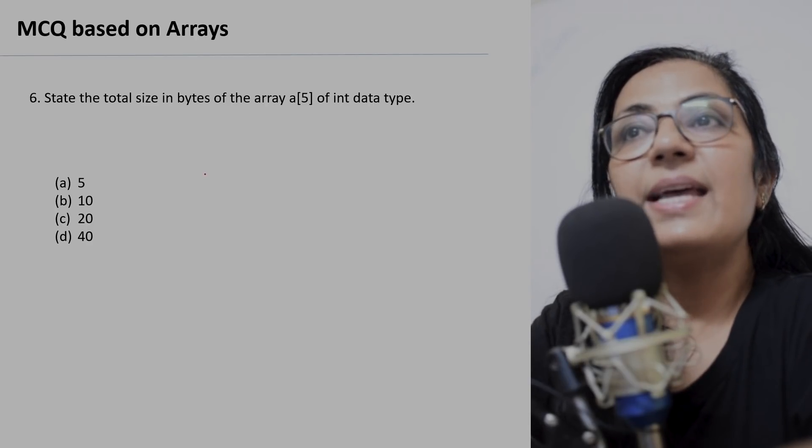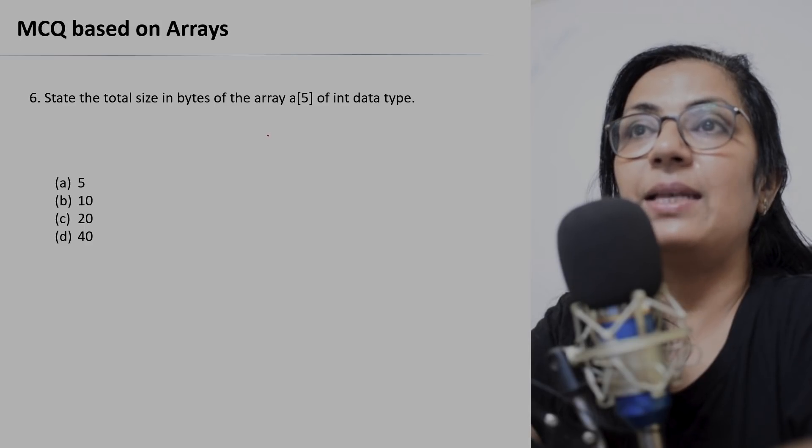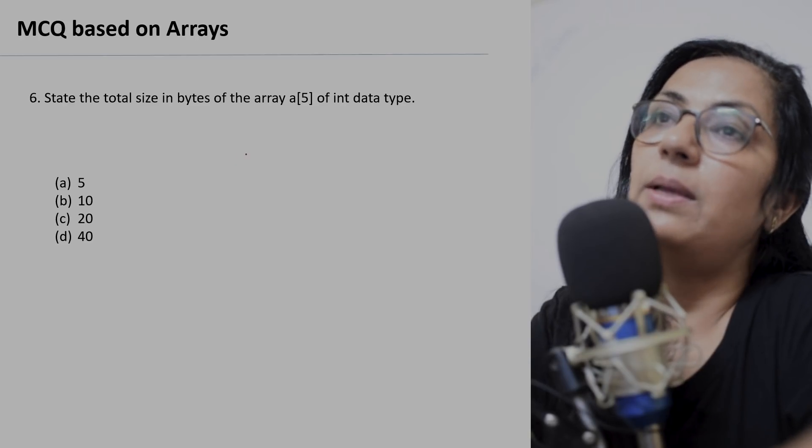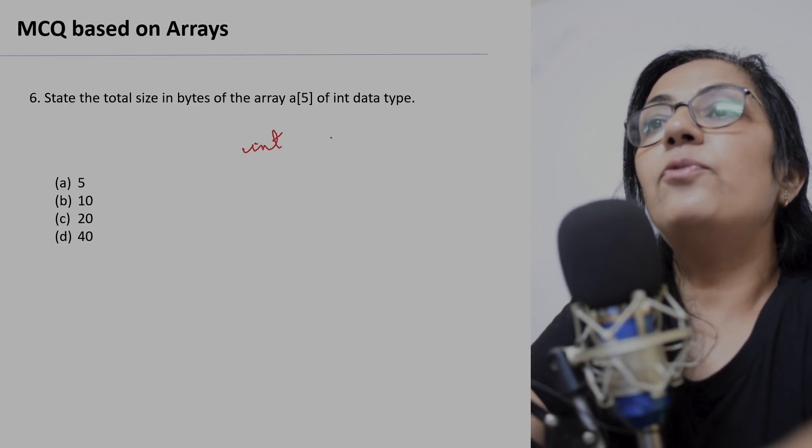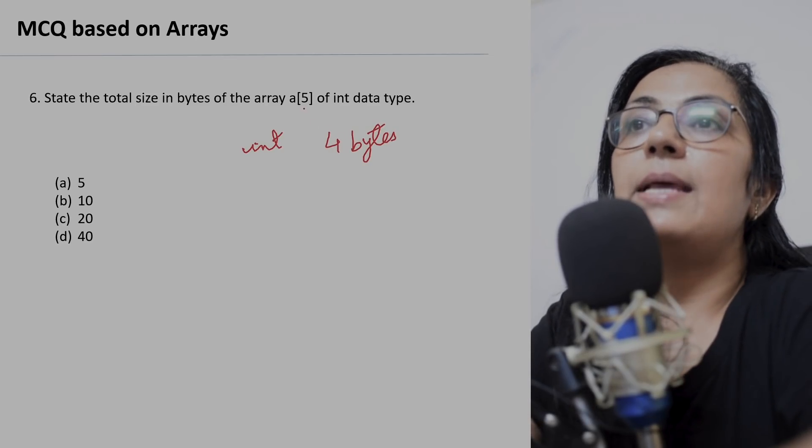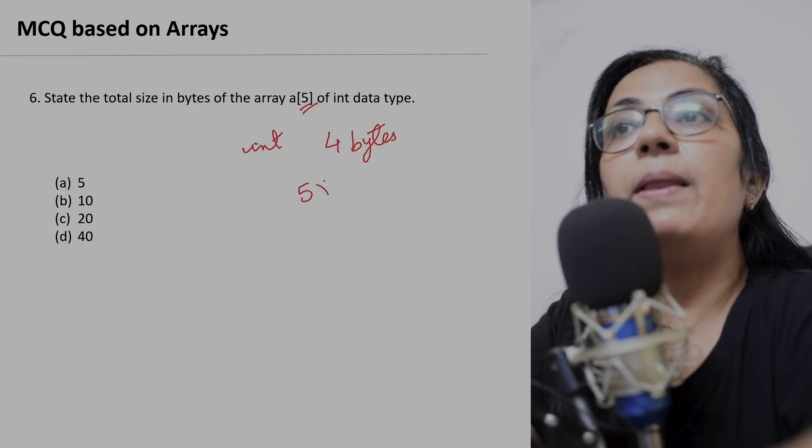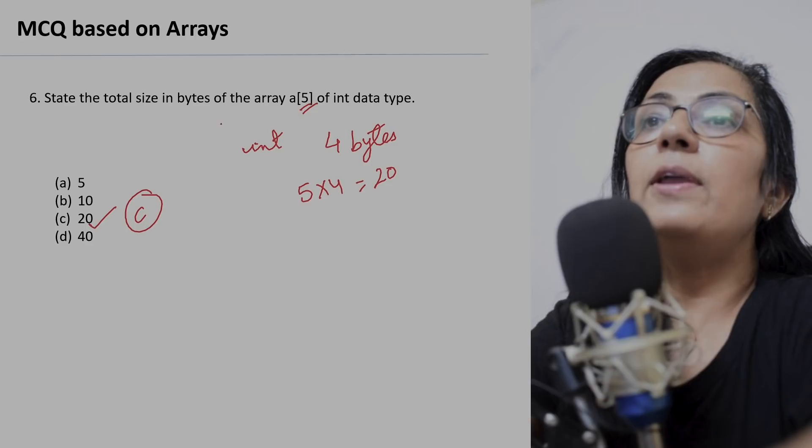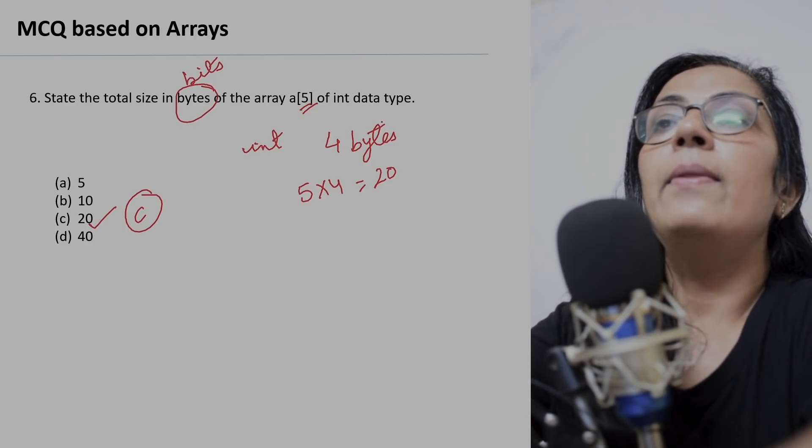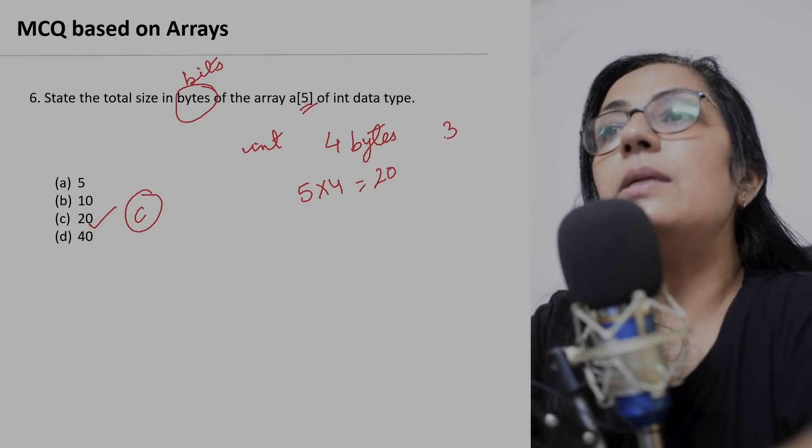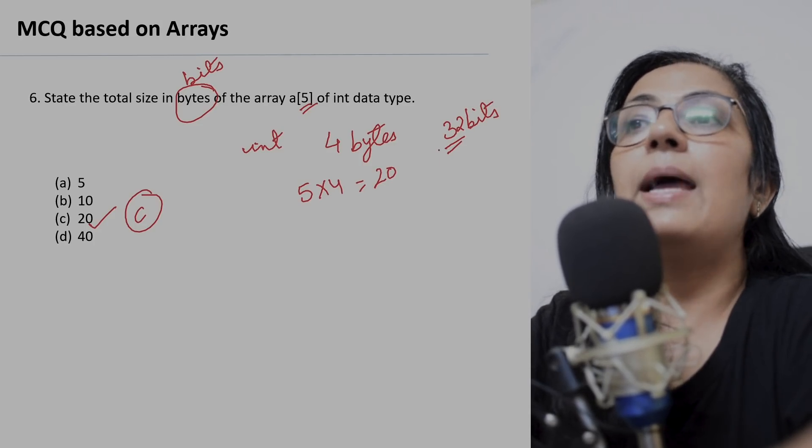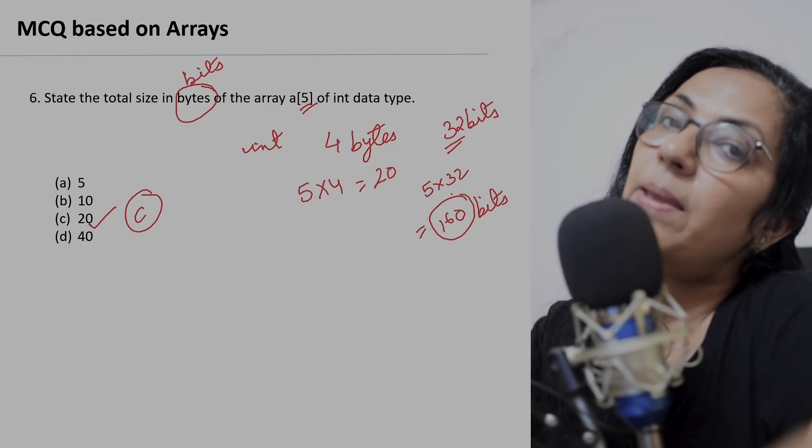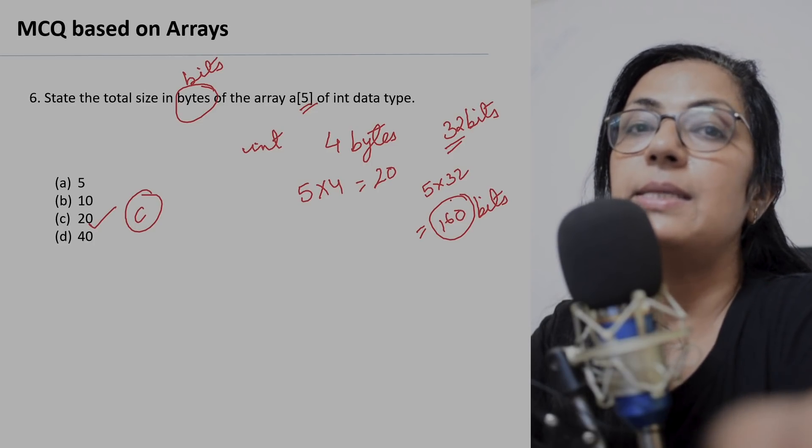Next question: state the total size in bytes of the array a[5] of int data type. Children, here is that question. So my advice to you is to learn the size in bits and bytes for all the primitive data types. Int data type takes 4 bytes in the memory, so 4 bytes, and the size of the array is 5, so 5 multiplied by 4, it will give you 20. So total size in bytes is total 20. If in place of bytes it is written bits, now all of you know that one byte equals 8 bits, so int data type takes 32 bits. So here in that case it will be 5 into 32, that will be equal to 160 bits. So the question can be asked in bits also, in bytes also, for all the data types, whether it is int, char, float, double, byte, short.